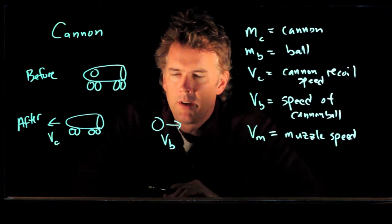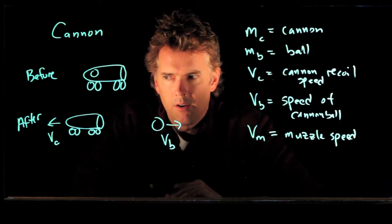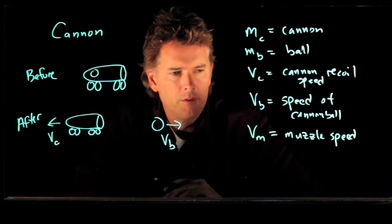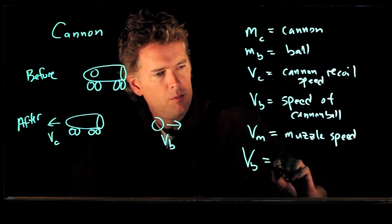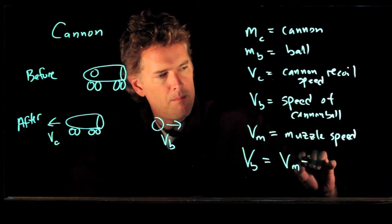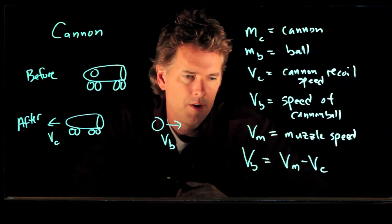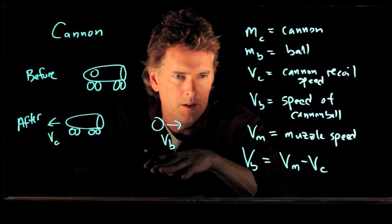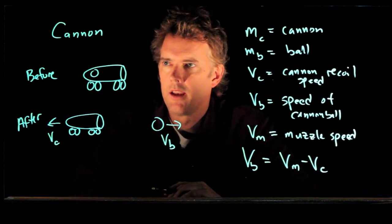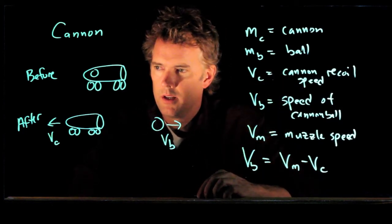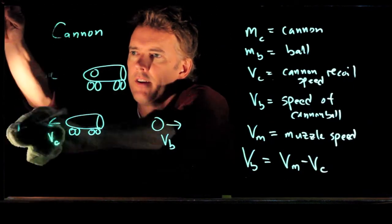Since the cannon is moving backwards, V ball relative to the earth is actually going to be less than the muzzle speed. So how do we write that? V sub B is equal to V muzzle minus V sub C. This is the Galilean velocity transformation — the actual speed of the ball relative to the earth is a little bit less than the muzzle speed, the speed of it relative to the cannon. Now with all this information, let's see if we can find how to attack this problem properly using conservation of momentum.